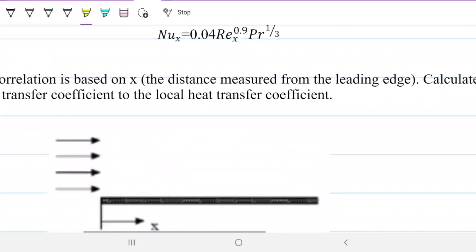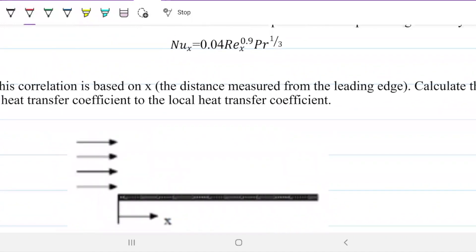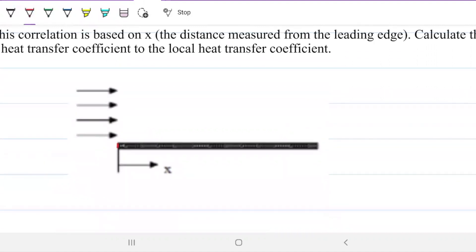Nusselt, our newest friend, is a number that is related to our heat transfer. On the situation here, we have a flat plate, which is this guy here, and we have air or some fluid coming on top of this flat plate.